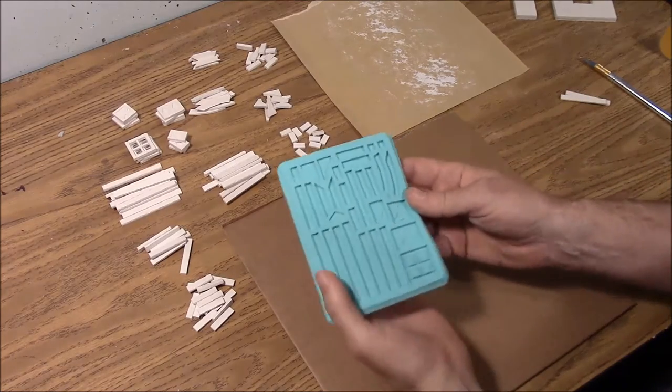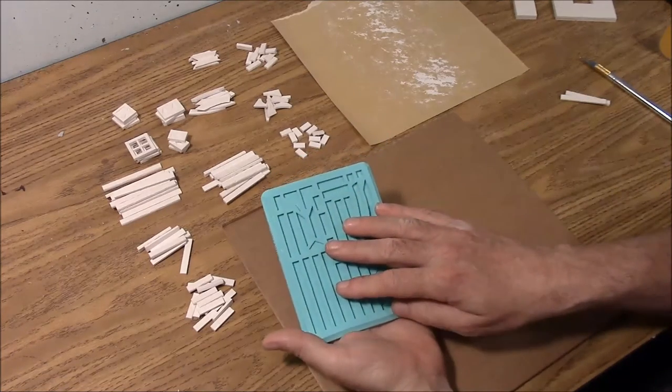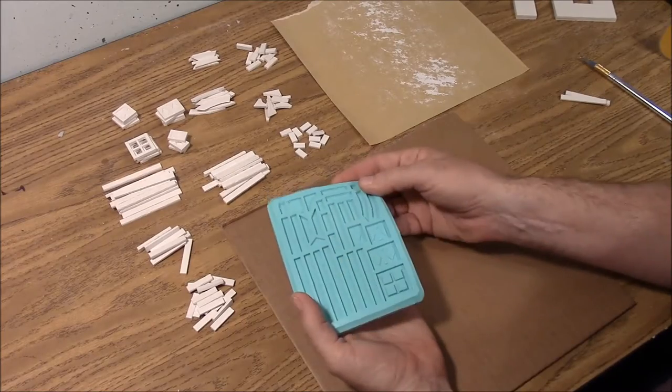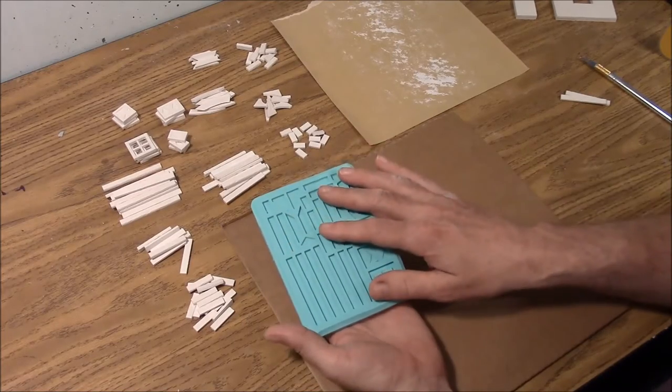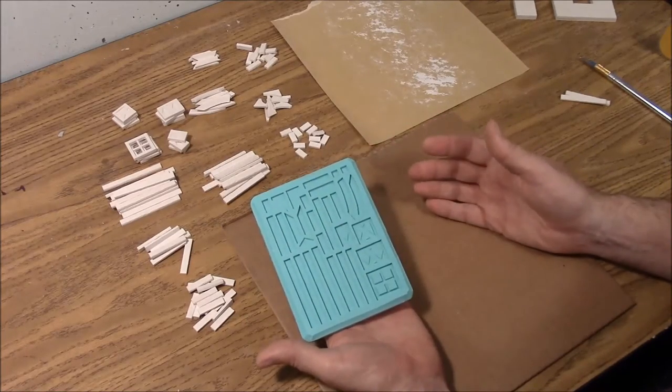This is a quick tutorial on how to paint the wooden planks from mold number 225. Basically what I'm going to do is paint all the planks separately, then glue them on the side of the house.